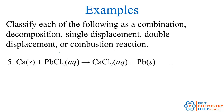In our last example, we've got calcium plus lead chloride reacting to form calcium chloride plus lead. Notice the chlorine was with the lead, then it went over to be with the calcium to make calcium chloride. So one part of the substance was displaced, meaning this would be a single displacement reaction.